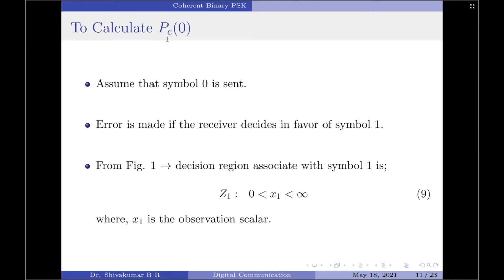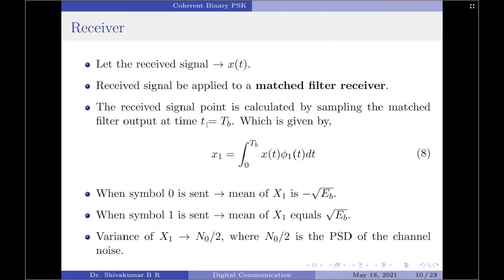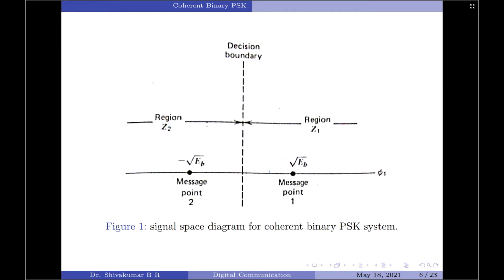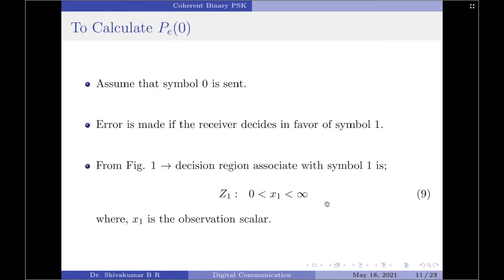The probability of error of the first kind is denoted Pe(0). To calculate Pe(0), assume symbol 0 is sent; an error will be made if the receiver decides in favor of symbol 1. From the constellation diagram, the decision region associated with symbol 1 is defined by x1 from 0 to infinity. So when symbol 0 is transmitted, if x1 lies anywhere between 0 and infinity, that constitutes an error. We write the decision boundaries for region Z1 accordingly, where x1 is the observation scalar.